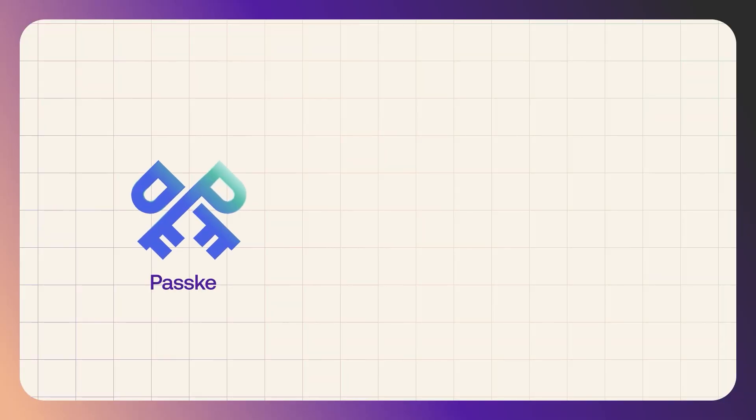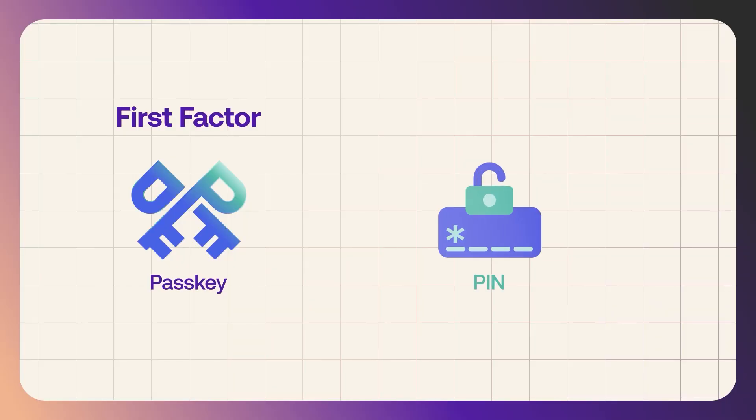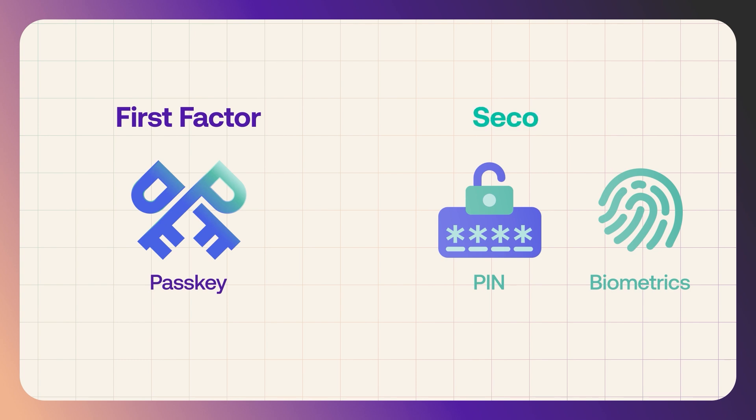When you use passkeys, you're already using two factors in one, which means that you're using multi-factor authentication. A passkey is something that you have and that's the first factor, and to use it you need to provide something that you know, for example like a pin, or something that you are like your biometrics, like your fingerprint. And that would be the second factor. Although it's recommended that you set another factor like an authenticator app or email for recovery reasons.